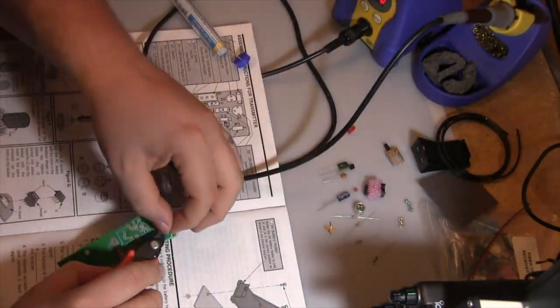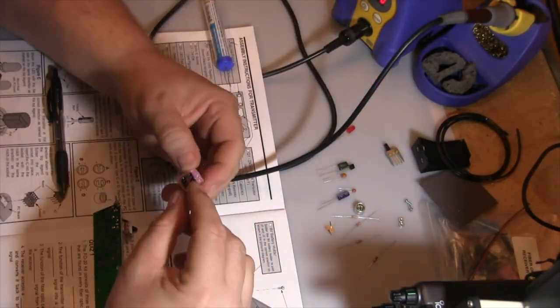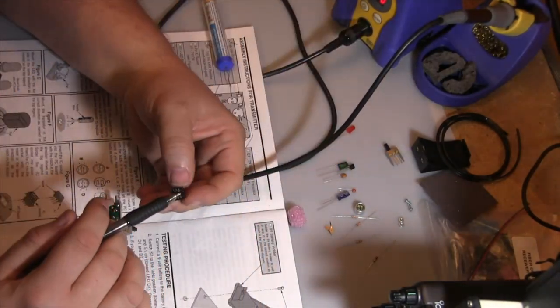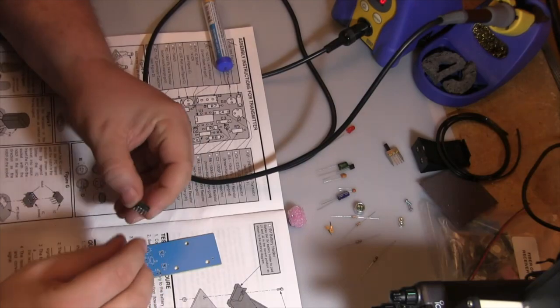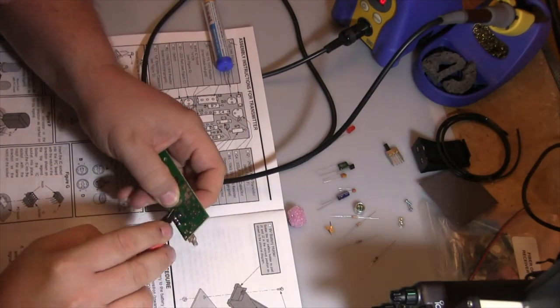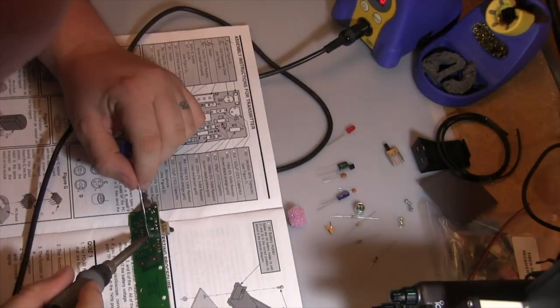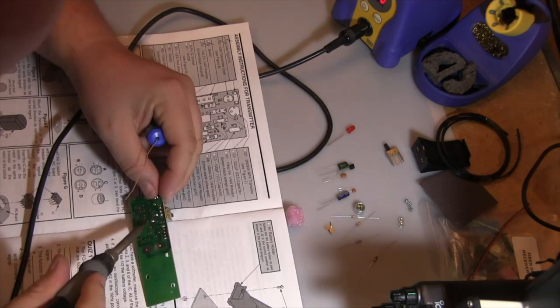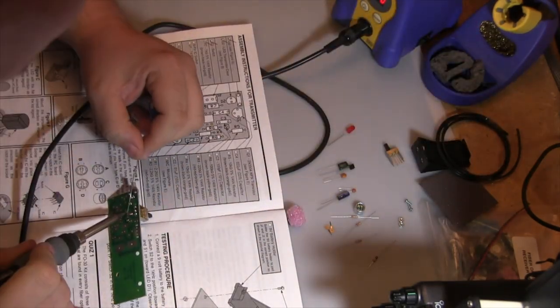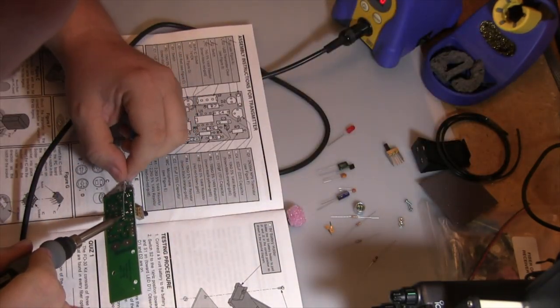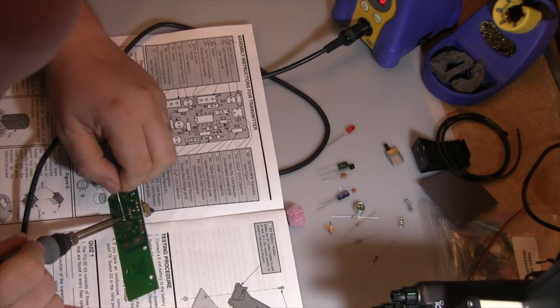I'm going to solder various components onto the printed circuit board. Right here this is the socket, the IC socket, and it is keyed in a way. On all IC sockets there's either a notch on one end that indicates where pin one is going to be at.